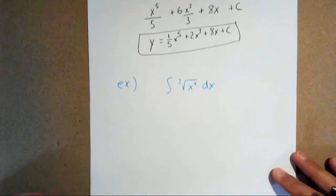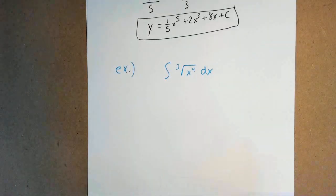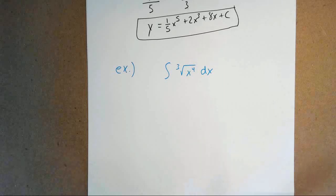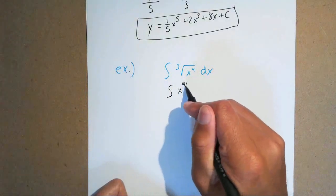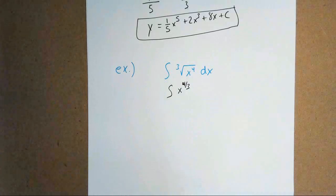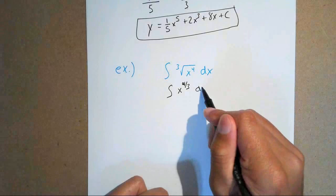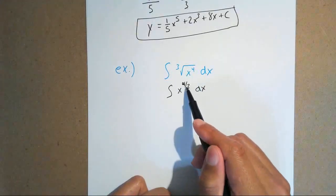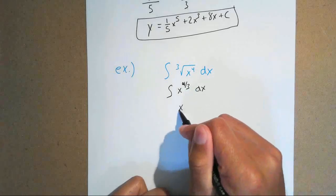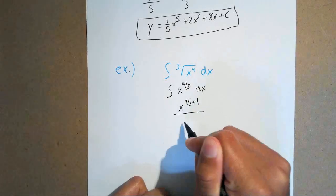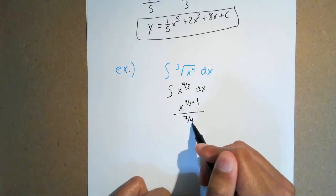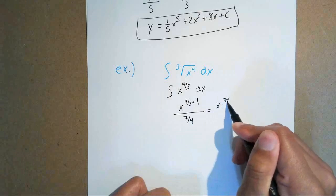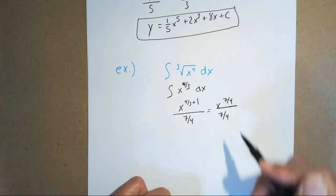What happens when there's a radical? Anytime there's a radical, ask yourself what you had to do to find the derivative. You need to change the radical into a rational exponent. So change the cube root of x to the 4th into x to the 4/3. Since it's still an exponent, add 1 to it: 4/3 plus 1 equals 7/3. So you get x to the 7/3 over 7/3, plus C.